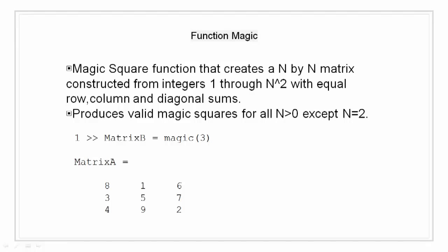Point to note that this function produces valid magic squares for all n greater than 0 except for n equal to 2. Here, I have created a 3 by 3 matrix B by passing argument 3 to the function magic.